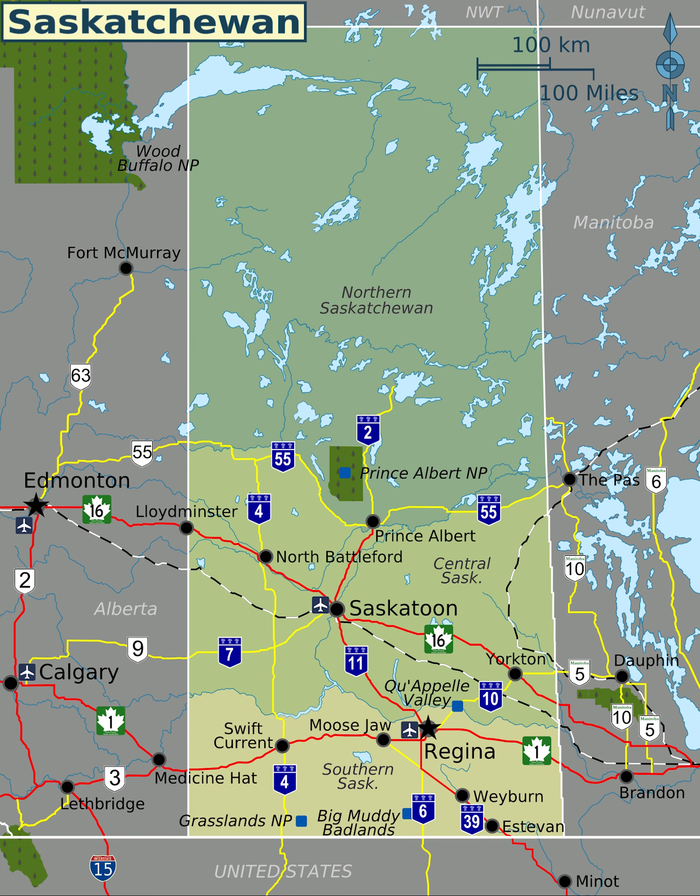Northern Saskatchewan is mostly covered by forest except for the Lake Athabasca sand dunes — the largest active sand dunes in the world north of 58 degrees — adjacent to the southern shore of Lake Athabasca.